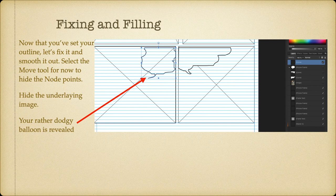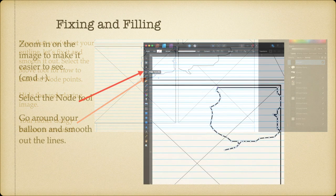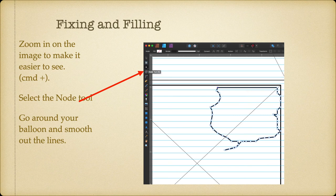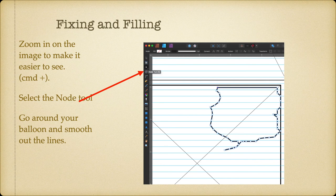Your rather dodgy balloon is now revealed. We're going to fix it and fill it — zoom in on the image to make it easier to see. That's the Command and the plus key to zoom in; Command and the minus key will zoom out. Now that you've zoomed in a little bit, go and select the node tool — you can see it highlighted on the left. Go around your balloon and smooth out the lines. If you select each little node you can move the line in and out. If you still have snapping turned on, hold the ALT key — that's the one at the bottom next to the Command key — and it won't snap to the edges so you can freely move those little nodes about.